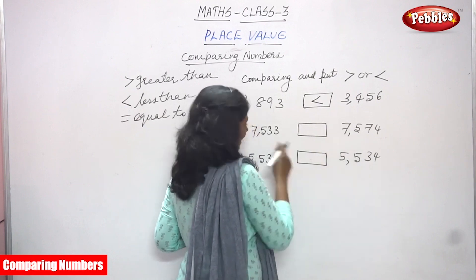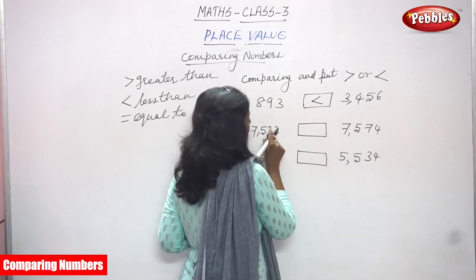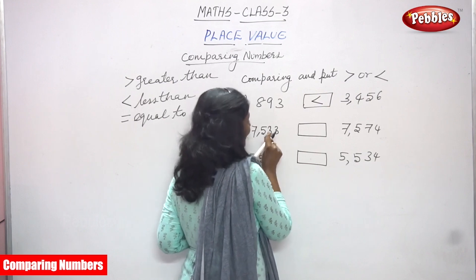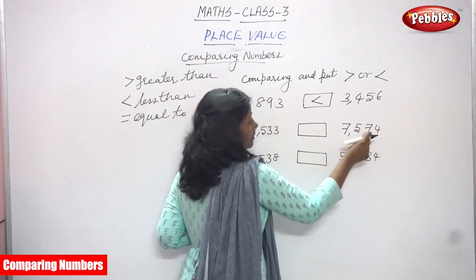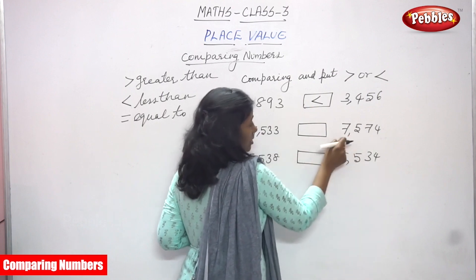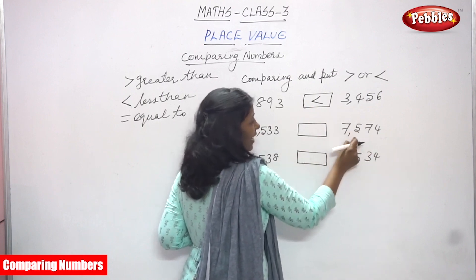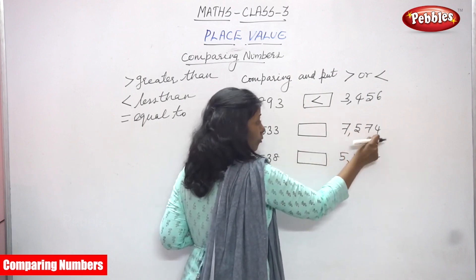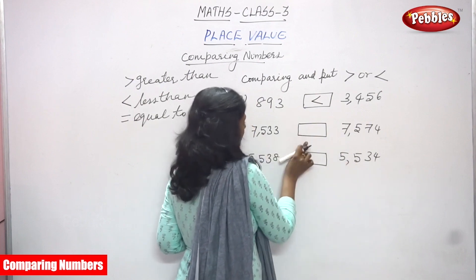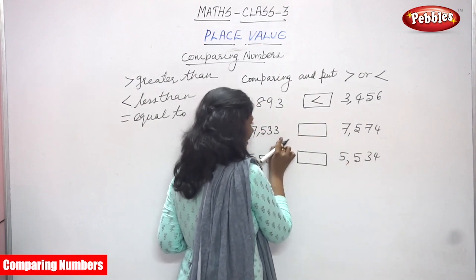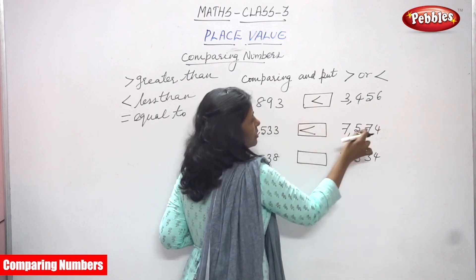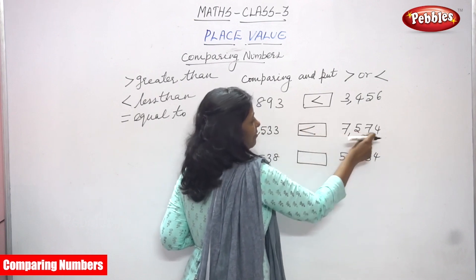So again you have to go to the tens place. In the first number, three tens. In the second number, seven tens. So which is greater? Automatically you know that 7574 is the greater number. So 7533 is less than 7574.